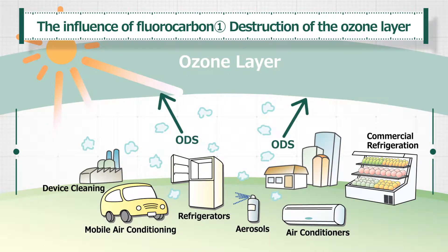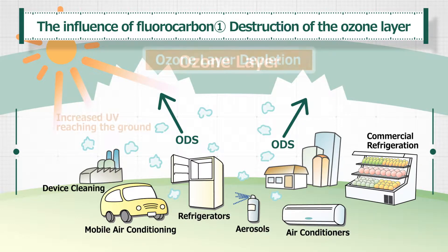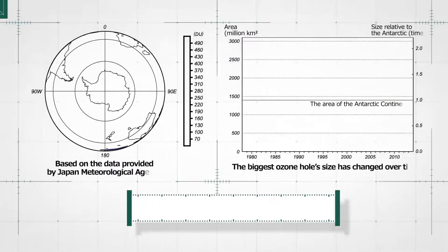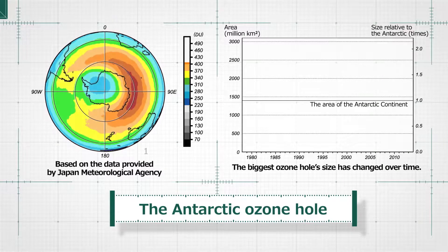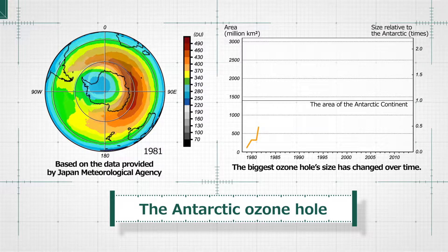One is the destruction of the ozone layer. The ozone layer, located in the stratosphere, absorbs harmful ultraviolet rays and protects creatures on the earth. However, when fluorocarbon is released into the atmosphere, it destroys the ozone layer. In the Antarctic region, a hole in the ozone layer was found and it has expanded since the 1980s.